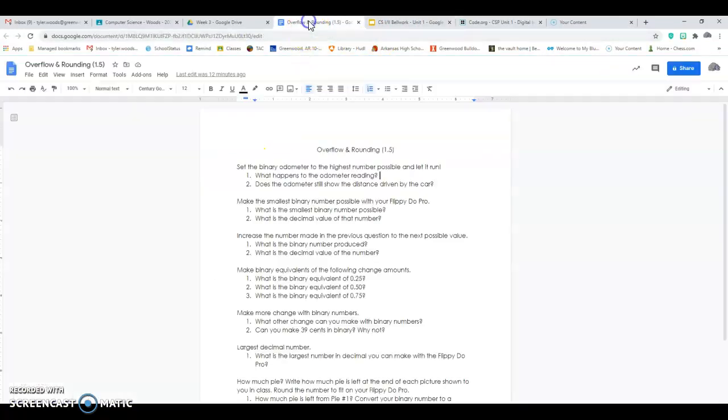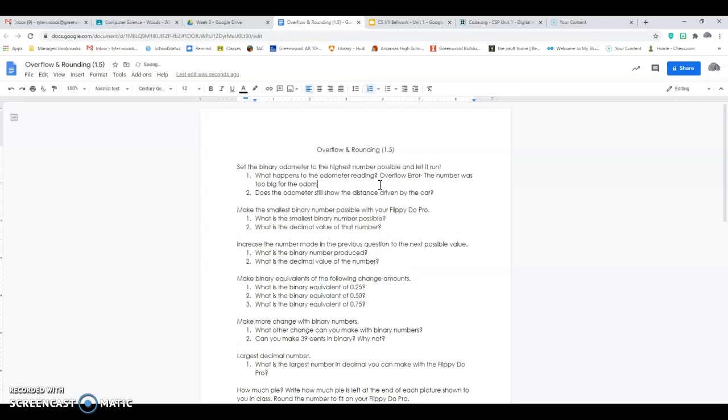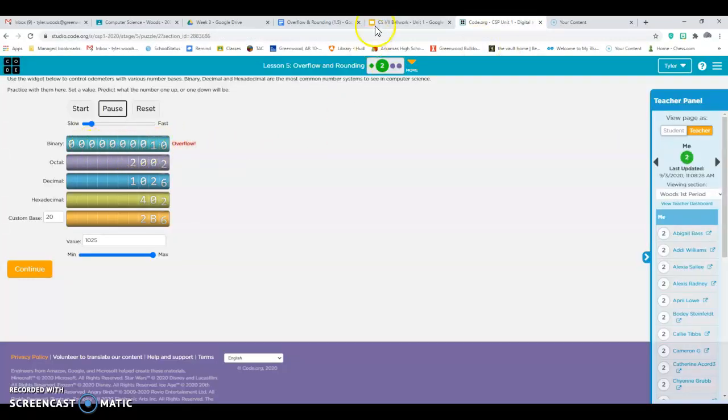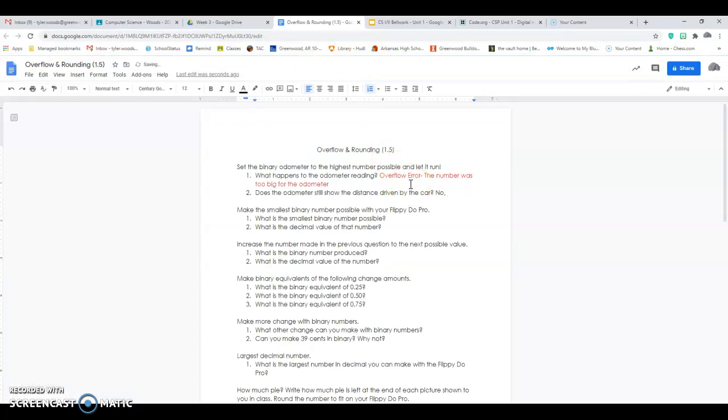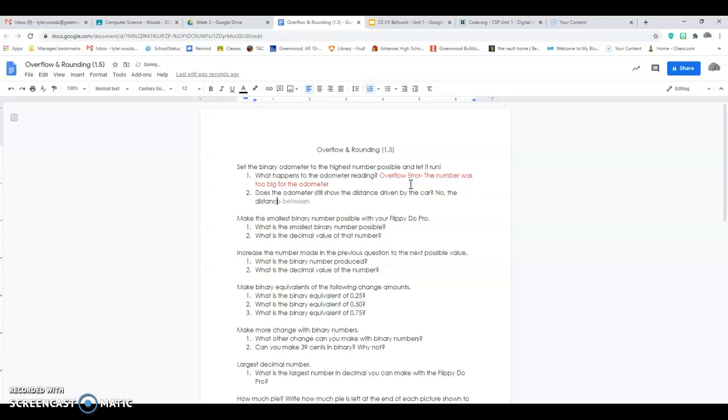Let's go back to the bell work. We actually, and I want you to open up this worksheet, and we'll answer these questions together. So it says, set the binary odometer to the highest number possible and let it run. What happened to the odometer reading? Well, what happened? It was an overflow error, and so it says the number was too big for the odometer. Now remember, try to put your answers in red ink if you can. Does the odometer still show the distance driven by the car? Does it show the distance? Well, it shows a distance, but that's not the correct distance. So we're going to say, no, the distance is incorrect.